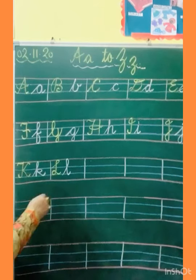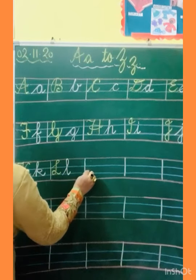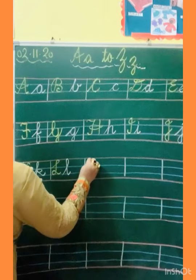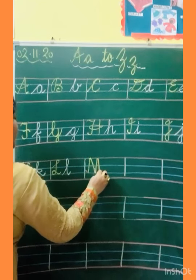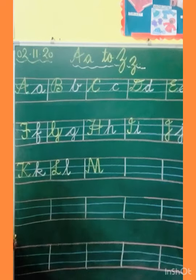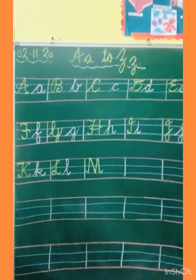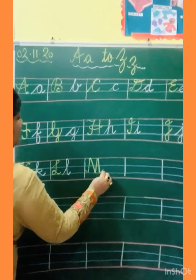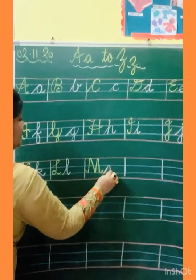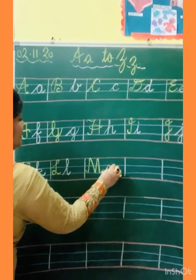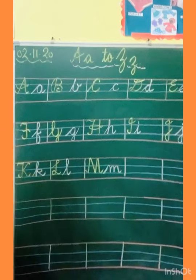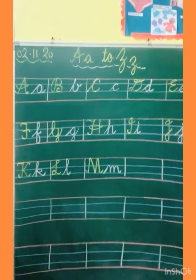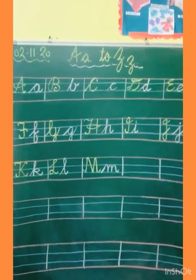Now capital M. Make slanting line, go up, come down, go up, come down, and kick. This is capital M. And how to make small M? Slanting, one turn, second turn, third turn, and kick. This is small M.